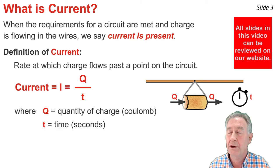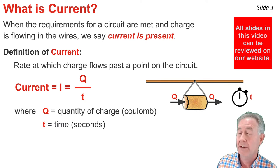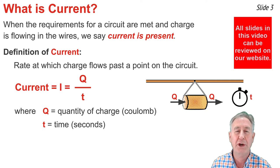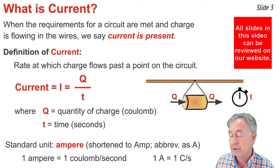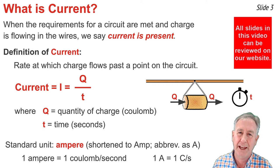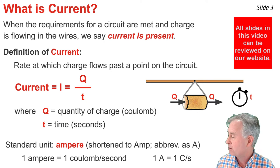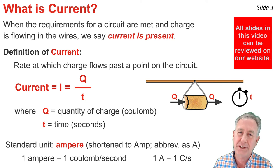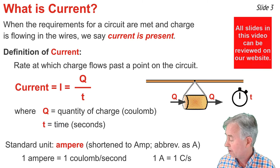If you wanted to find the current in a wire, you could take one point on that wire and measure the quantity of charge that passes by that point in some amount of time, and then take the ratio of Q per T. The unit for current is the ampere, abbreviated amps, and represented by the symbol A, where one ampere of current is equivalent to one coulomb of charge that passes by a point on the circuit in a second of time. In other words, 1A is equal to 1C per S.